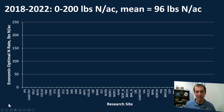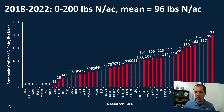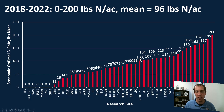First, we want to spend a little time on what nitrogen rates are looking like in South Dakota. In this graph, we're going to see across 45 different site-years what our nitrogen requirements have looked like over the last several years. We see quite a range — some sites going from zero all the way up to 200 pounds of nitrogen per acre. The mean of all this is around 96 pounds of N, right in the middle, which is where we're normally hitting for nitrogen requirements in South Dakota.